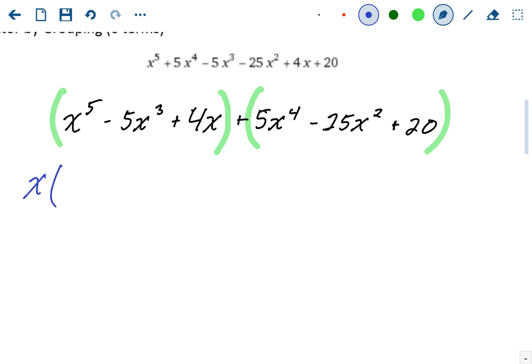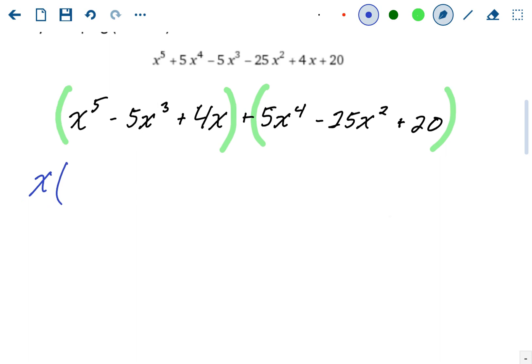Now what's left over? Well, you go to each of the three terms. You can take away 1x. So that's going to leave x to the fourth power, minus 5x squared, plus 4.